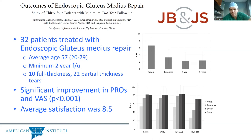Looking at the outcome data, you can see the pain score preoperatively was around a seven, and two years out it was about a three. This is the kind of surgery where it's hard to make someone perfect, but you can make patients better. A lot of them are very grateful because they're coming in walking with canes and a limp, and if you can fix that for them, they're going to be some of your favorite patients.